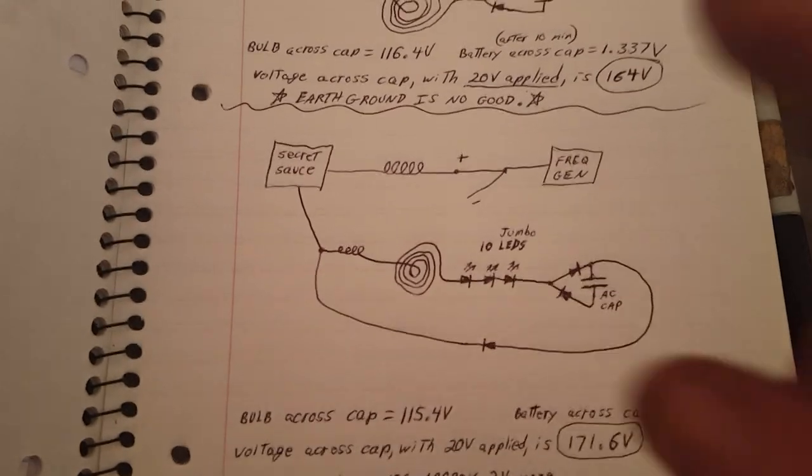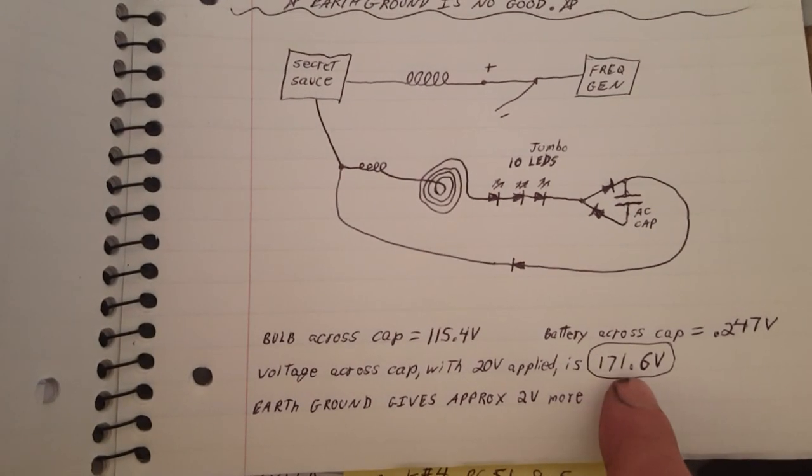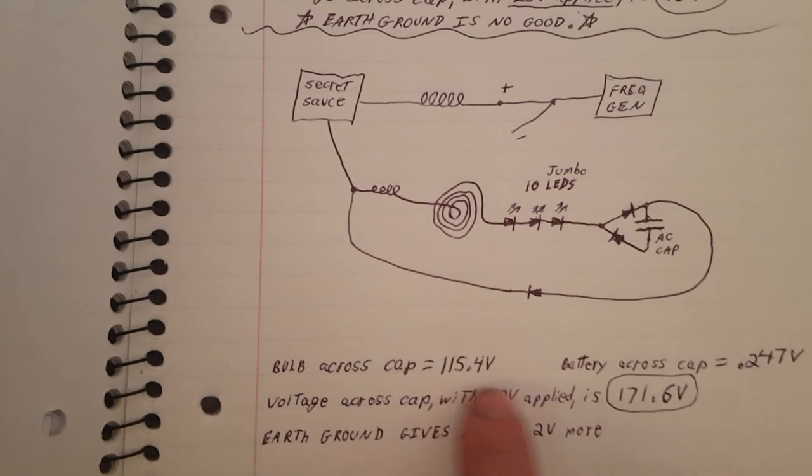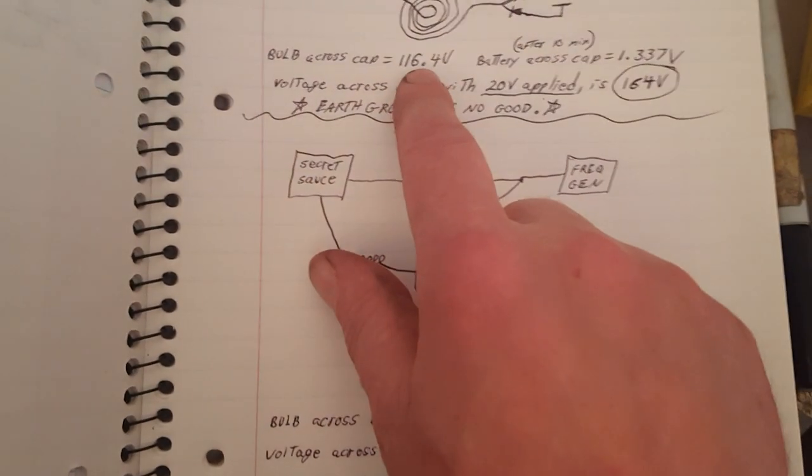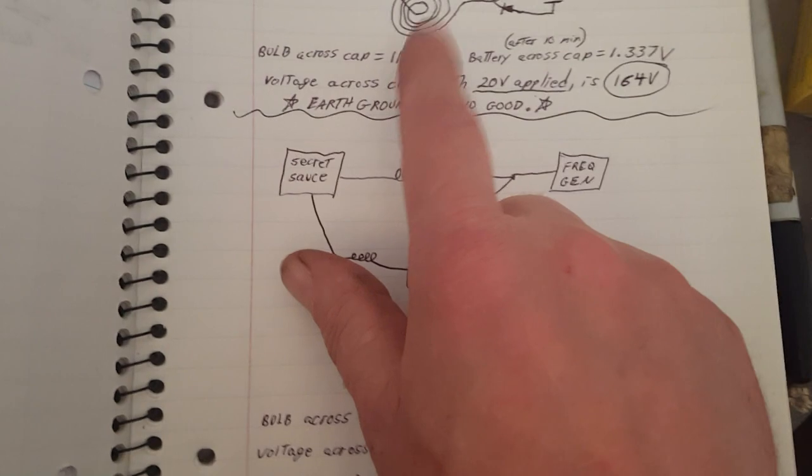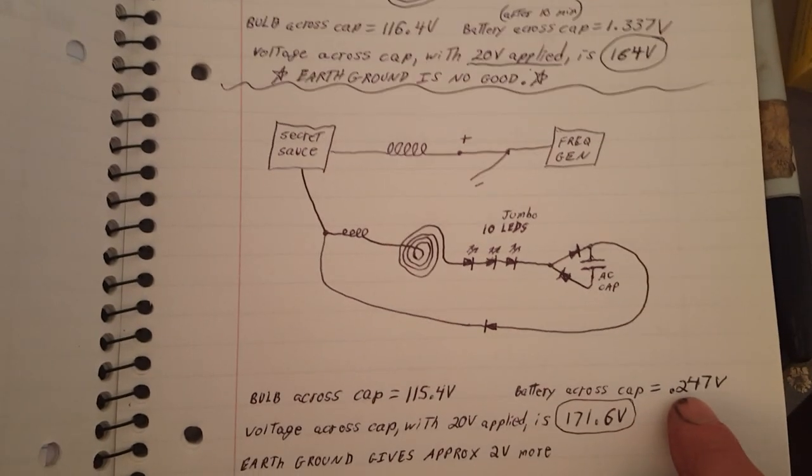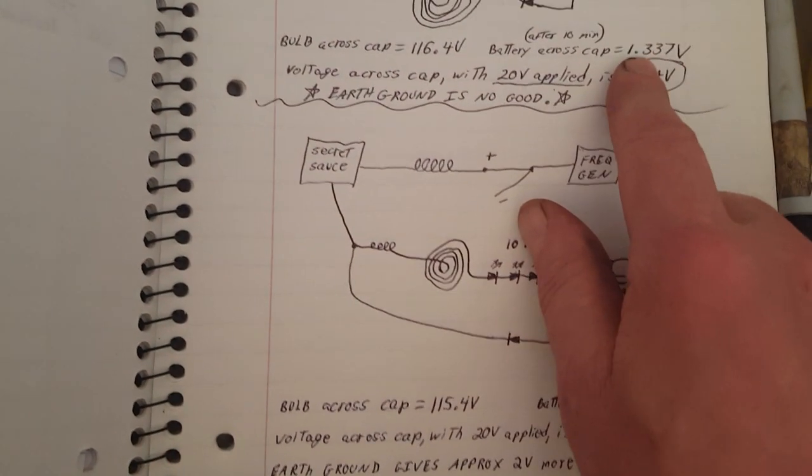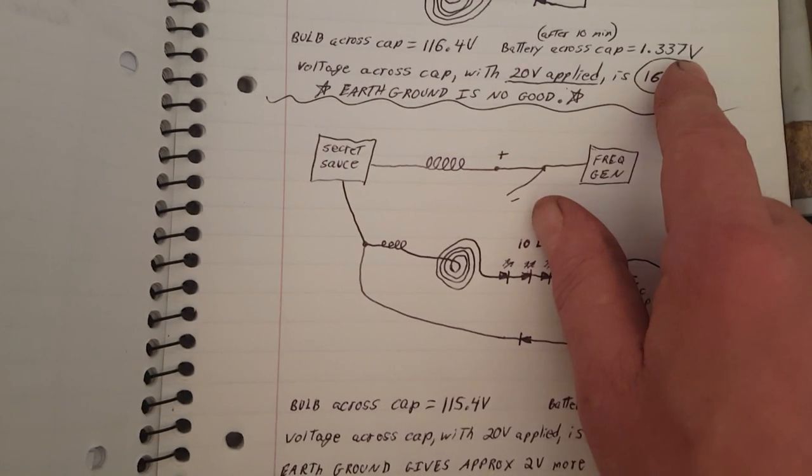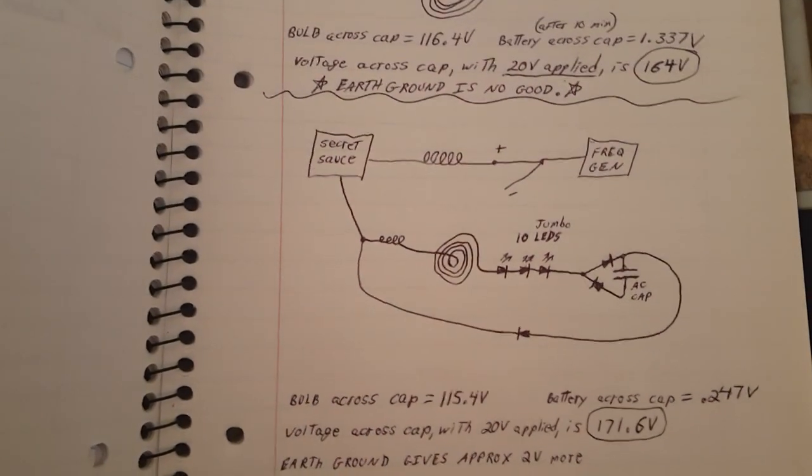Okay, after reviewing my last video clips, right, we did have 164 volts across the capacitor here. In this scenario we had even more voltage, but when we put the bulb across there we have less voltage. 115 here, 116.4 here. The bulb was much brighter in the first scenario. Even the batteries across the cap, this was only a quarter of a volt. This one charged up 1.337 volts. It would keep going if I went past 10 minutes, but still I had another scenario that was faster.